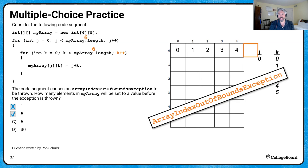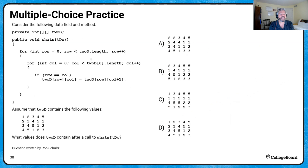Five is our correct answer — answer B. The key lesson: we have to make sure we're looking at the number of rows using myarray.length for the outer loop, and specifically looking at the number of columns — myarray[0].length — for the inner loop if our intent is to traverse in row major order.